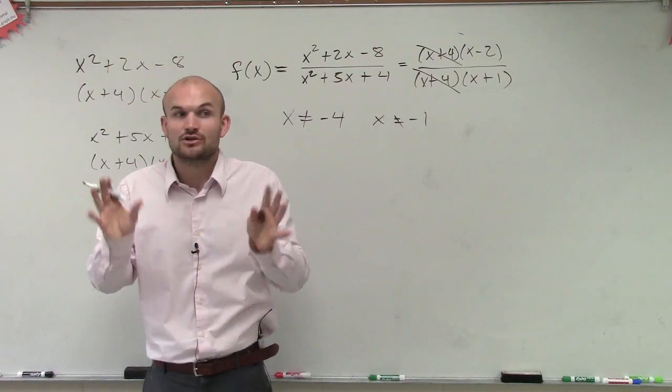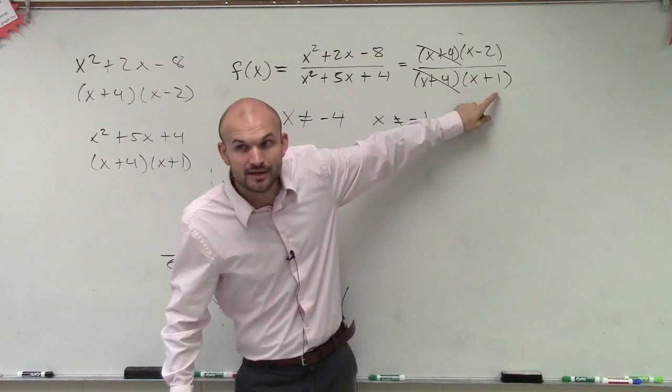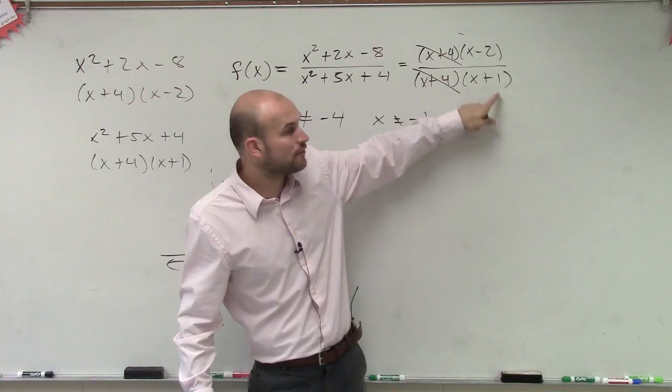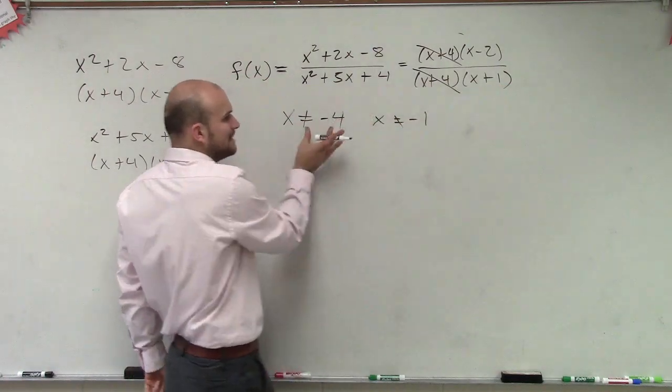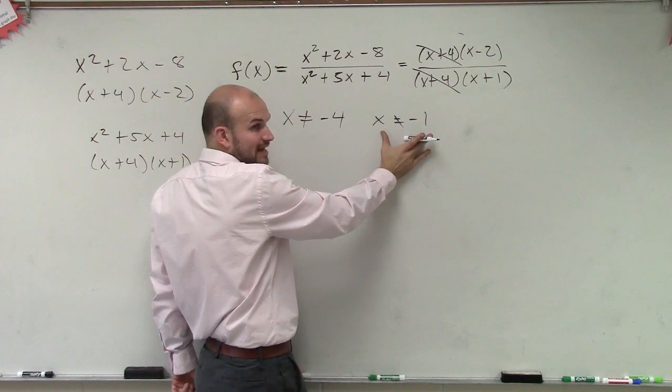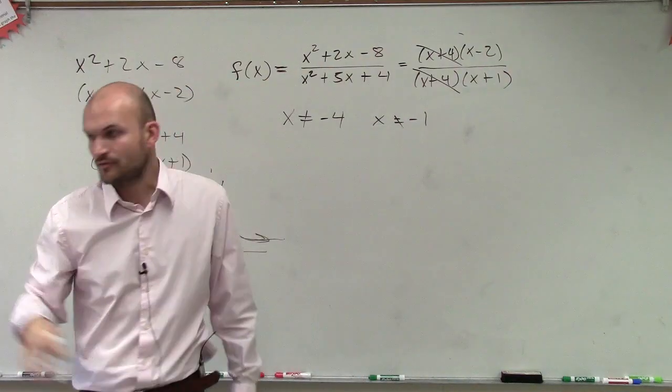This x plus 1 is still a discontinuity, but when factored, it cannot divide out. You cannot factor out. So therefore, this is non-removable. So your removable would be x equals negative 4. Non-removable is x cannot equal negative 1. I'm sorry. Your removable is x equals negative 4. Your non-removable equals x equals negative 1.